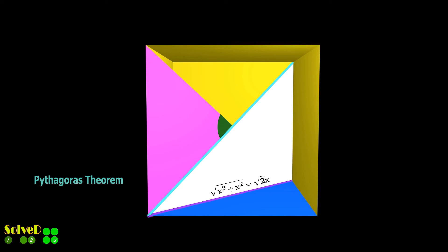Now focus on the white triangle, and find the internal diagonal length, using the Pythagoras theorem.